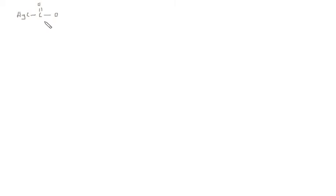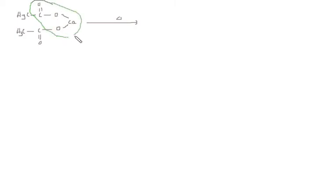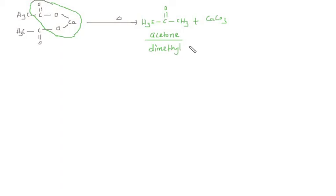Let's move to another example — calcium salt of acetic acid, which is calcium acetate: (CH₃COO)₂Ca. On heating, there is removal of calcium carbonate, and the product is CH₃–C(=O)–CH₃ plus CaCO₃. This compound is called acetone, also known as dimethyl ketone.